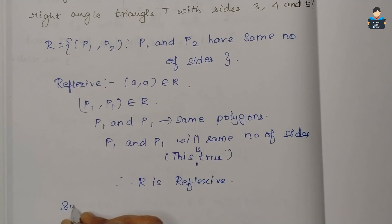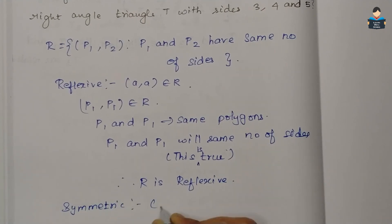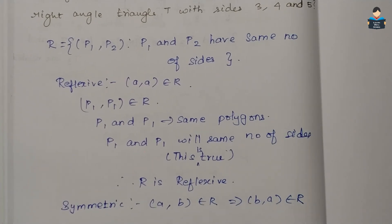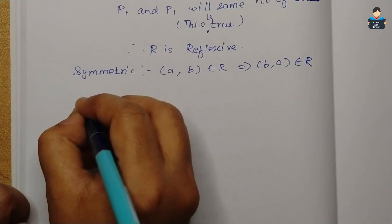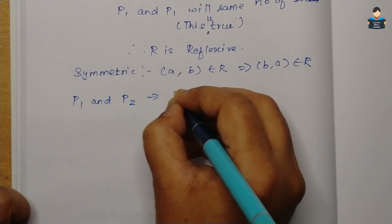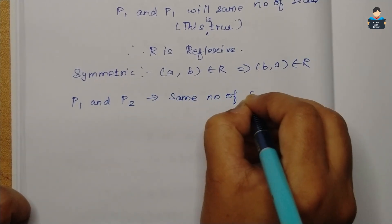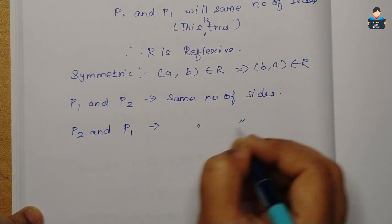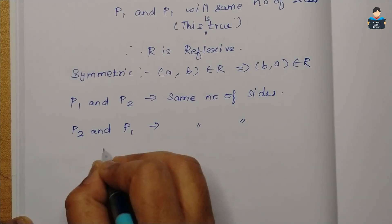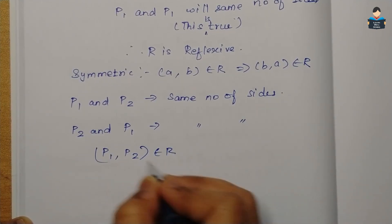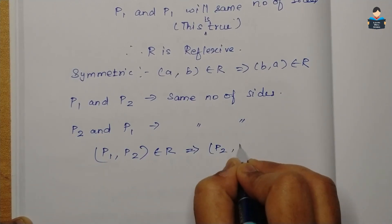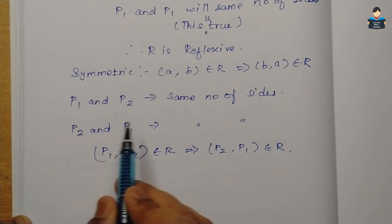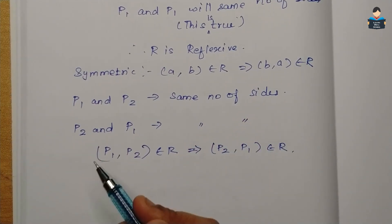Next, symmetric. The condition is: if (A, B) belongs to R, this implies (B, A) belongs to R. So if P1 and P2 are polygons and P1 and P2 have the same number of sides, then P2 and P1 will also have the same number of sides. So (P1, P2) belongs to R implies (P2, P1) belongs to R. Therefore R is symmetric.